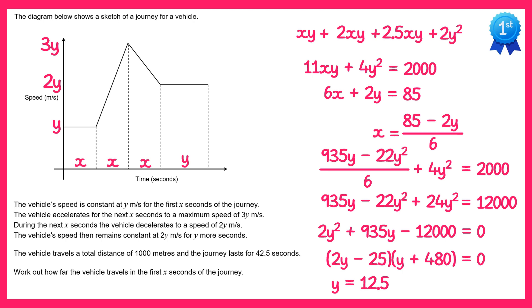So if you do 85, take away 2 lots of 12.5 and then divide by 6, you find x equals 10.